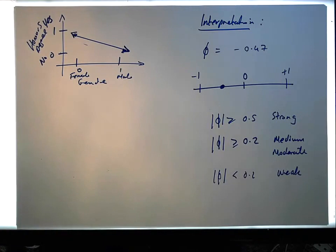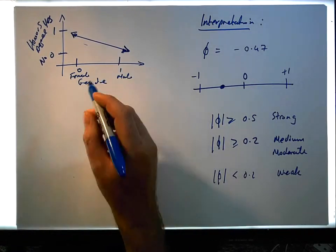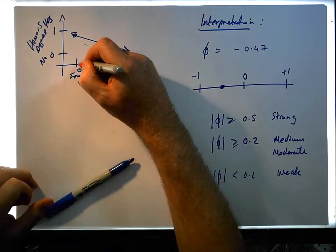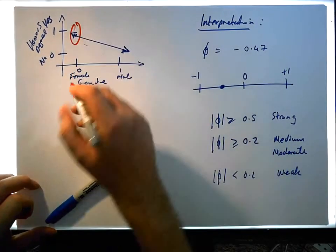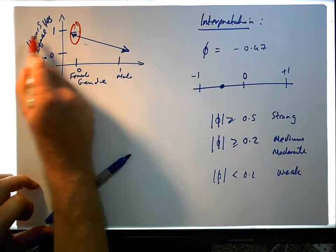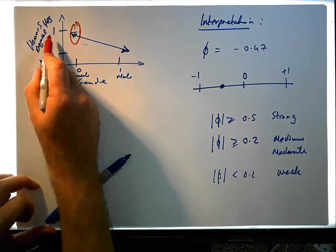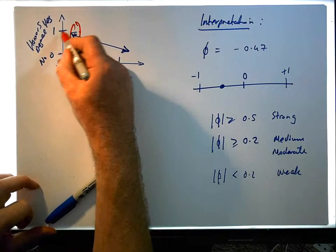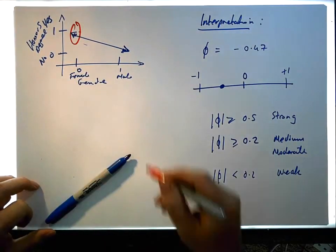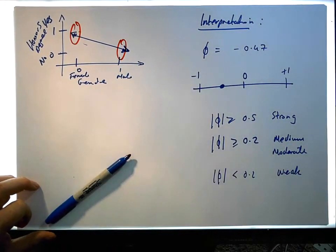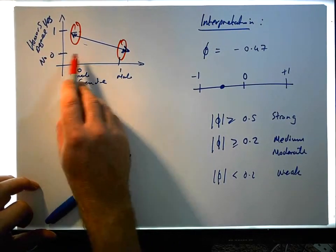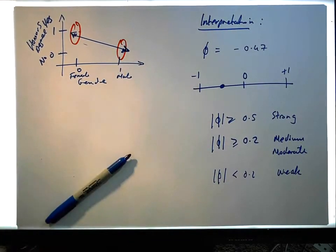Which is really saying that females are generally associated with high values on the honours degree variable. Remember it's dichotomous, so high values mean scores of one, so they hold degrees, whereas males are typically associated with low values on the honours degree, which means they don't hold degrees.